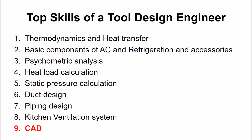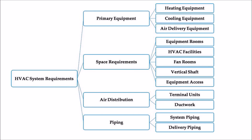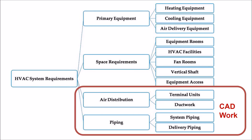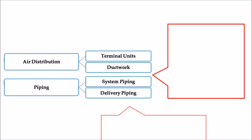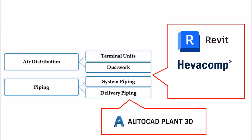The last and most important skill that an HVAC design engineer needs is knowledge of CAD software. After all the calculations and plans are made, the ducting and piping systems are designed on CAD software. Various softwares like Hewacomp, Revit, AutoCAD Plant 3D, and BIM are used in the industry. While you might have design experience on one of these, you need to have exposure to the others so that you don't miss out on any good opportunities.